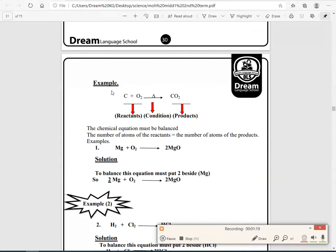C and O2 here on the left side, they are the reactants. And this triangle is the heating triangle or the condition reaction. CO2 is the product. You have to know that the chemical equation must be balanced. I mean that the number of atoms of the reactant must be equal to the number of atoms in the product.